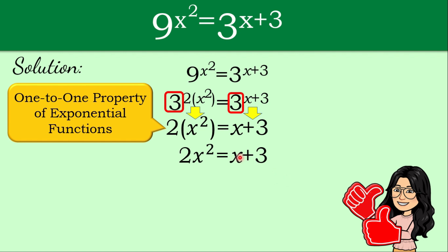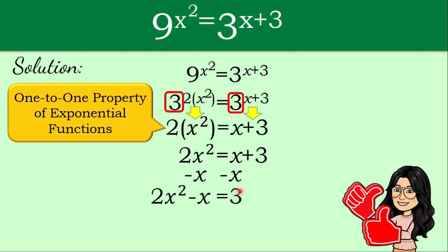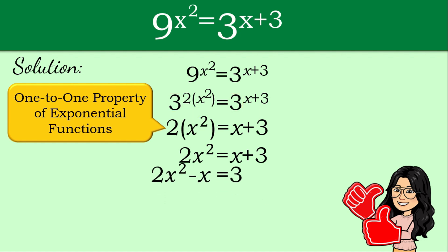To form the quadratic equation, we transfer x and 3 to the left side, having 0 on the right side. Applying the subtraction property of equality, we subtract x from both sides to get 2x squared minus x, leaving 3 on the right side. Then we subtract 3 from both sides to get 2x squared minus x minus 3 is equal to 0.